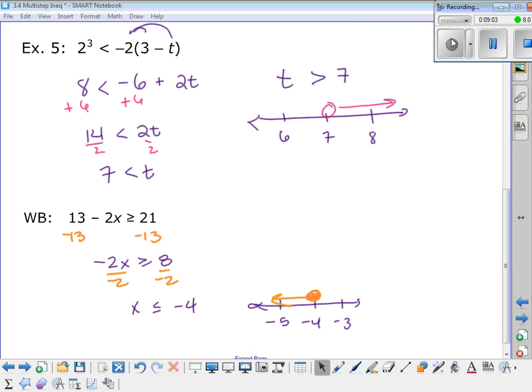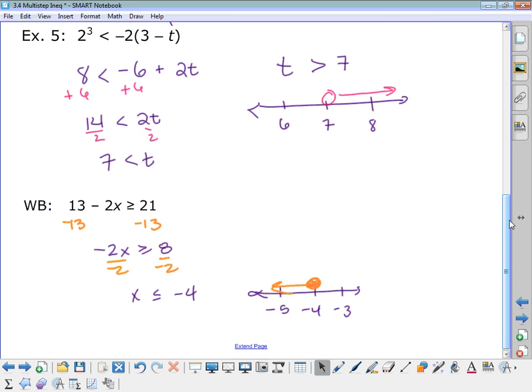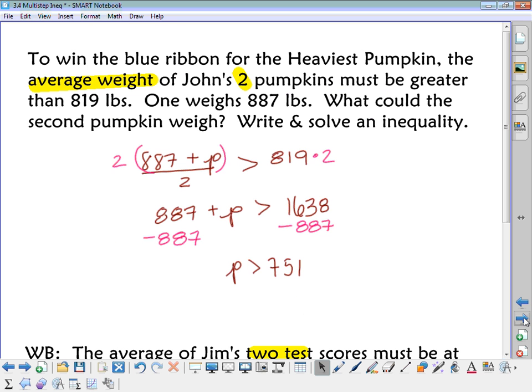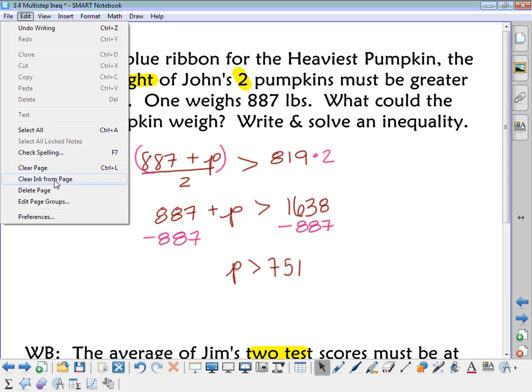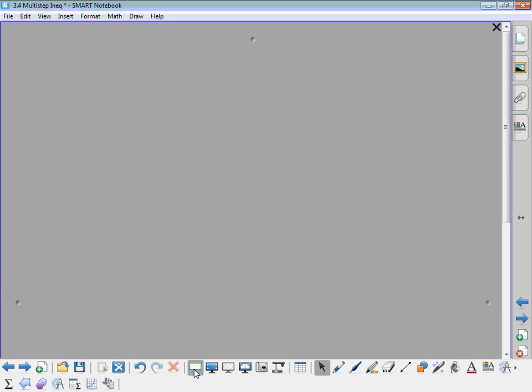Okay, so most of you did fine on that. Again, the only mistake that I saw consistently was a few people forgot to flip the sign when they divided by the negative 2. But otherwise, most of you had x was less than or equal to negative 4. Close circle going to the left. All right, so now we've got a word problem.